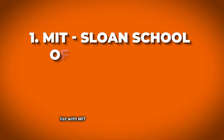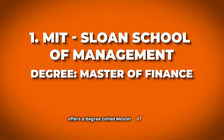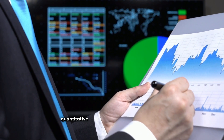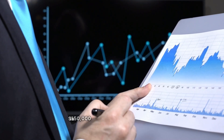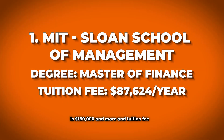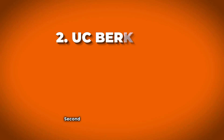First on the list is MIT Sloan School of Management, which offers a Master of Finance. The focus is on finance theory, quantitative finance, data science, and fintech. Average salary is $150,000 and more, and tuition is approximately $87,000 per year, coming to around one crore-plus for the 18-month program.